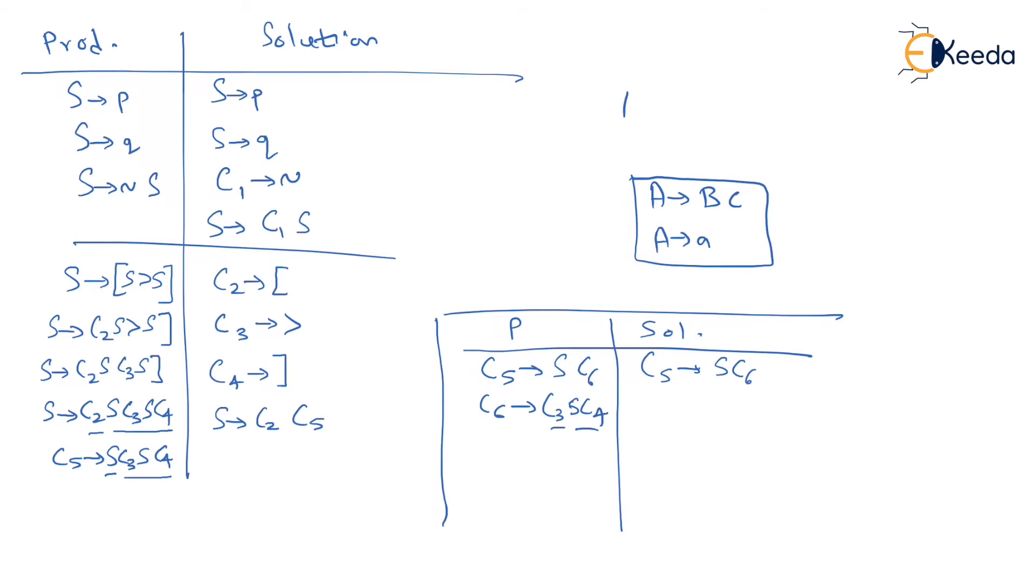Whereas, if I observe for C6, again keep C3 as it is and S C4 will be replaced by a further new production. Now I see let my C7 give my S C4 and C6 in turn will now be giving C3 C7. Now, I see all the productions have been converted to the Chomsky normal form.